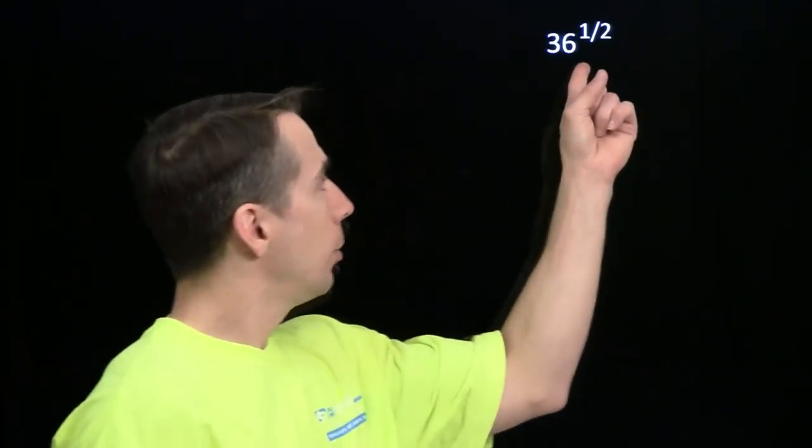We know how to handle whole number exponents. You raise the number to the power 1, you get that number back. Raise the number to the power 2, you multiply the number by itself. Raise the number to the power 0, you get 1. And raise it to the negative 1, you get the reciprocal of the original number. But what about fractional exponents? How do we handle them?